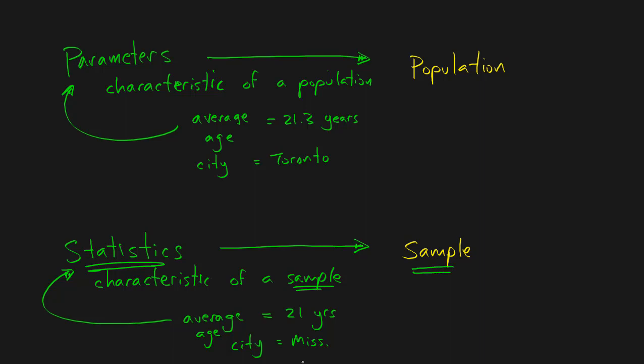And so this course is mainly about how to deal with statistics that describe samples. That's why the course is called statistics. Statistics describe samples. Samples are what we often have to work with because populations are simply too large and too challenging to observe directly. So parameters, just to recap, are characteristics of populations. Statistics are characteristics of samples.